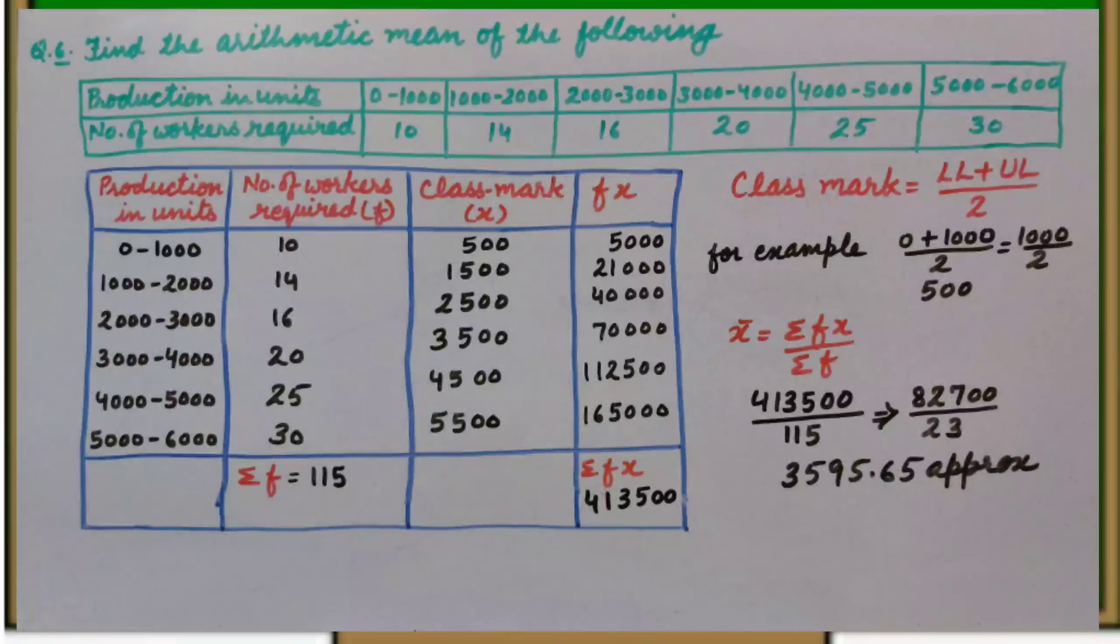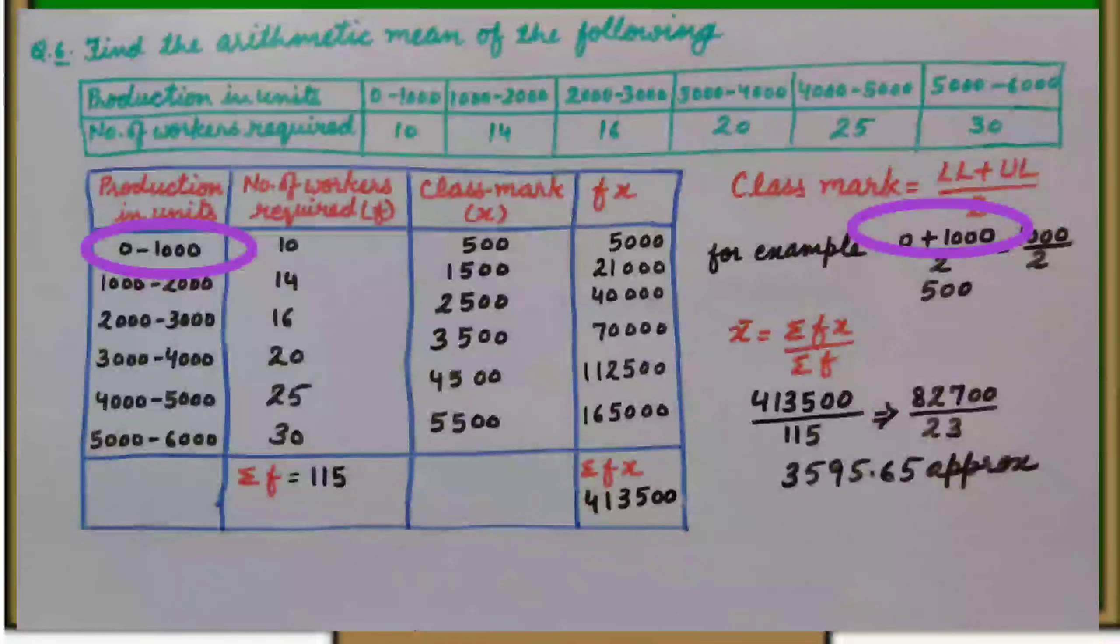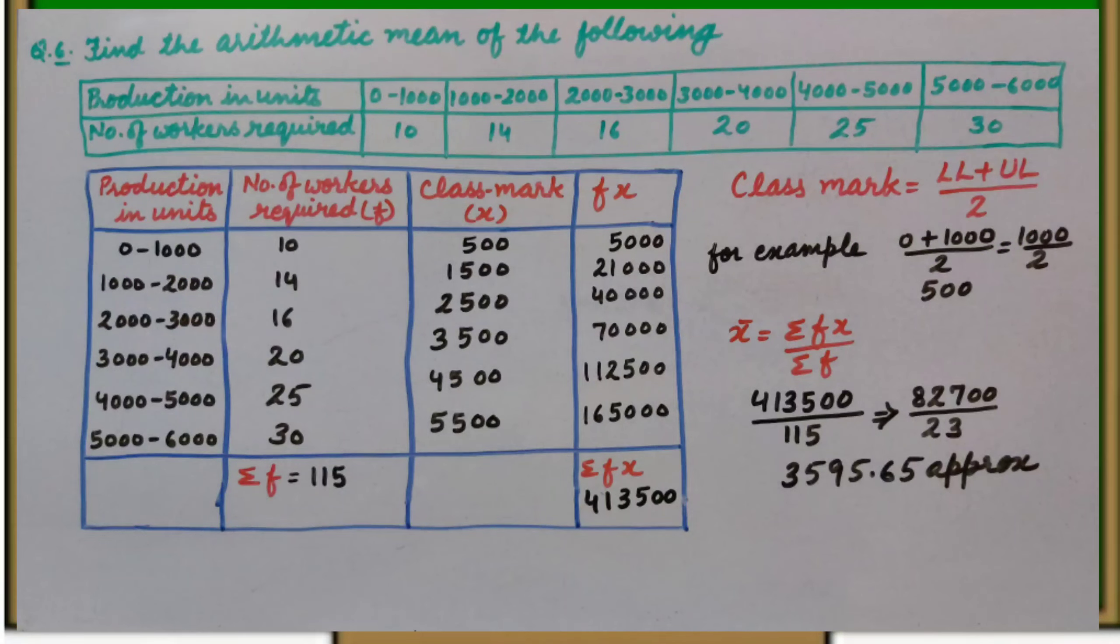For example, first class, 0 plus 1000 upon 2 is equal to 500. So, class mark for first class is 500.